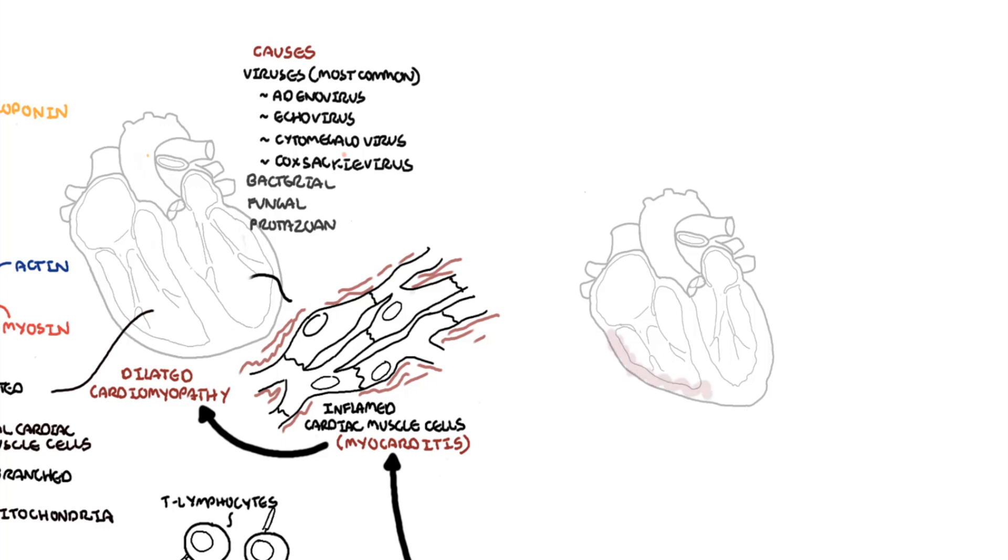Inflammation of the cardiac muscle cells by any cause will result in chest pain and leakage of troponin into the bloodstream from the damaged sarcomeres. The inflammation of the heart impairs heart contractility and filling, leading to reduced cardiac output and varying degrees of heart failure.